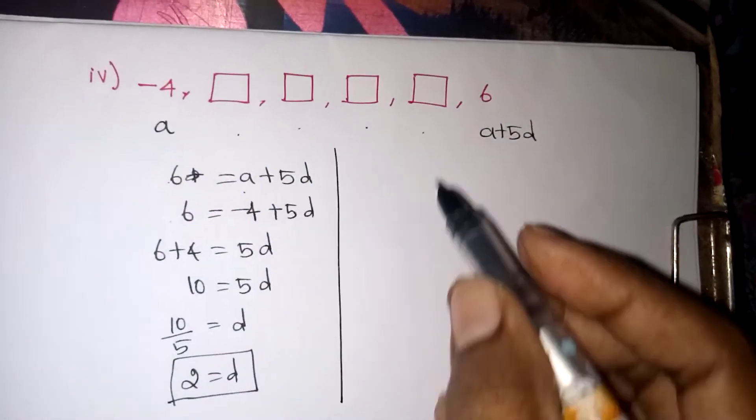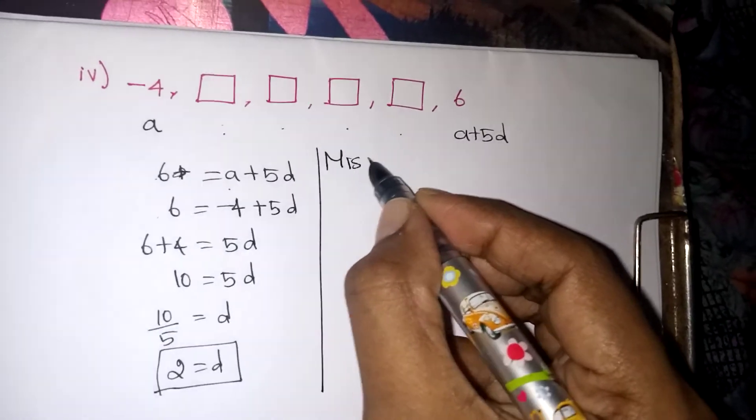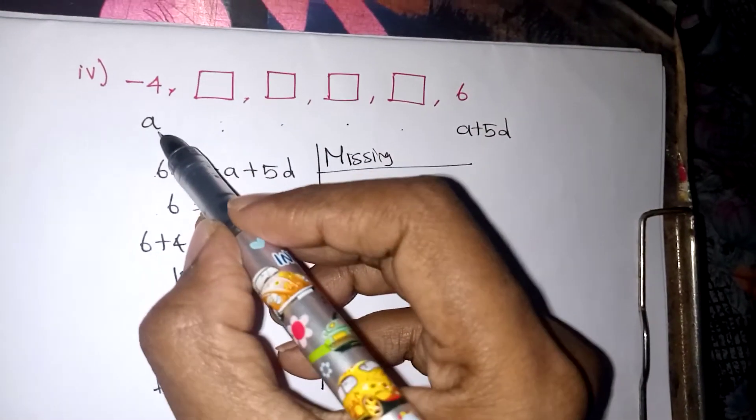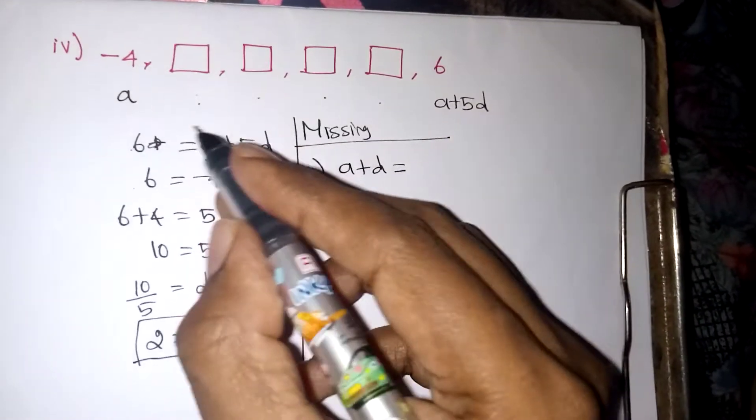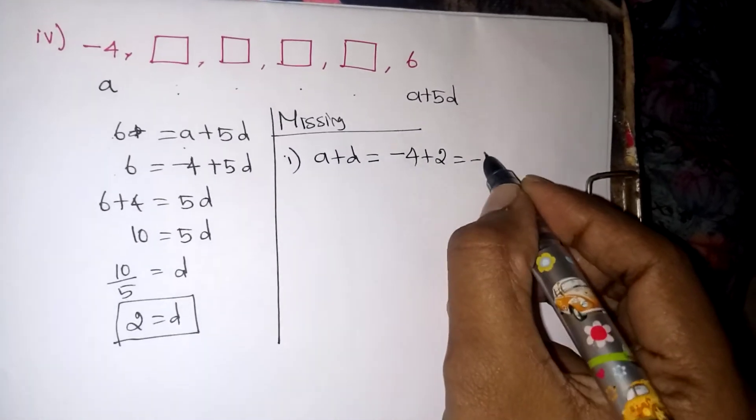So we know D value and we know what is the A value also. We can find all the remaining terms now. The first missing term after A is A plus D. So A plus D is A value minus 4 and D is 2. So plus 2. That is minus 2.